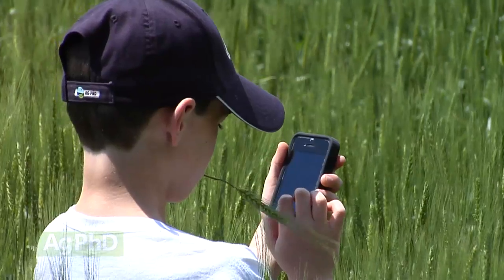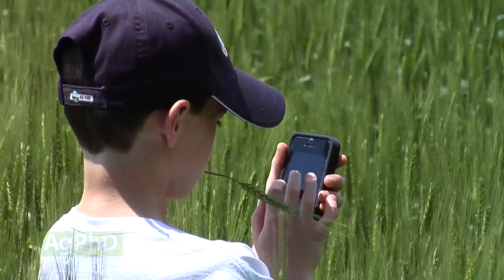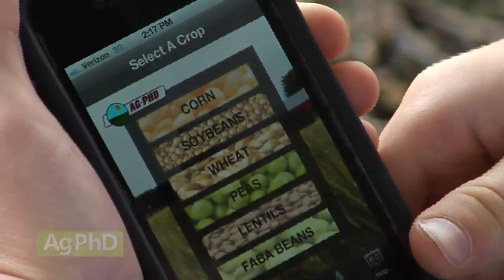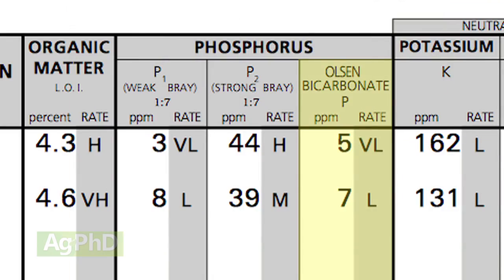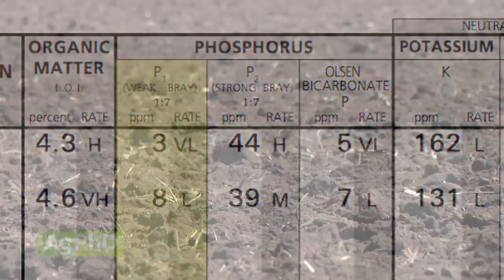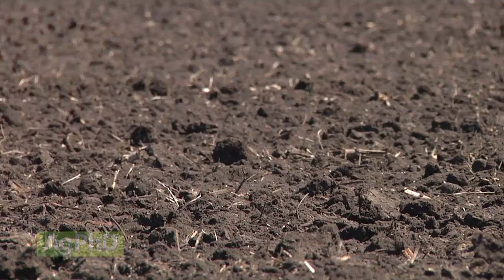Before you make a fertilizer recommendation for yourself on your farm, we advise you to take a look at how much your crop is actually going to remove. There is the free Ag PhD Fertilizer Removal App — you can plug in any crop and your yield goal and it will tell you how much total phosphorus you need. Then you can look at either the Olsen test if you have higher pH soil above 7, or the weak Bray or P1 test if you have soil pH below 7, and that will tell you how many parts per million are available.